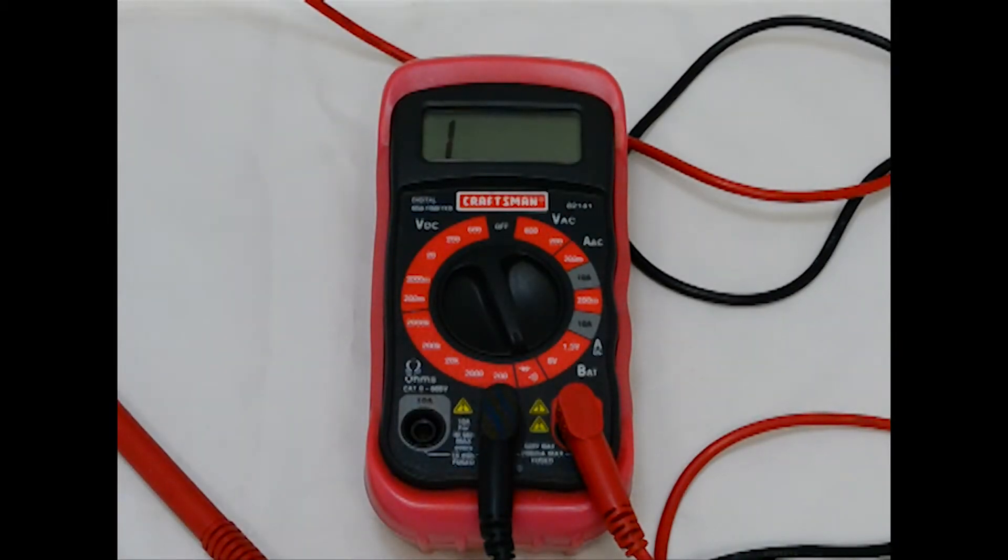This is how you set your meter to check for continuity, which is if two things are electrically connected. You're going to be setting your meter to the diode setting.